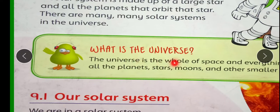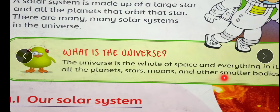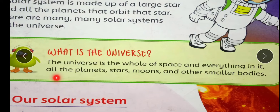What is the universe? Universe kya hai? The universe is the whole of space and everything in it. All the planets, stars, moons and other smaller bodies. Universe ek poori space aur jo kuch bhi iske andar hain. Jaisa ke tamam sitare, siyare, chand aur baaki tamam chhoti chhoti ajsam se milkar bana hain.